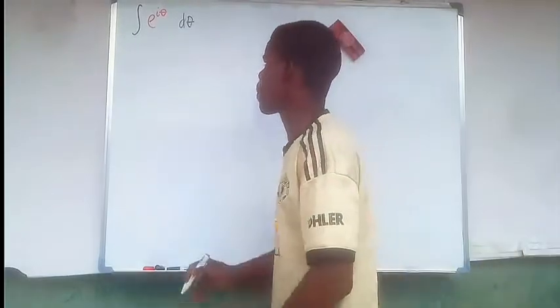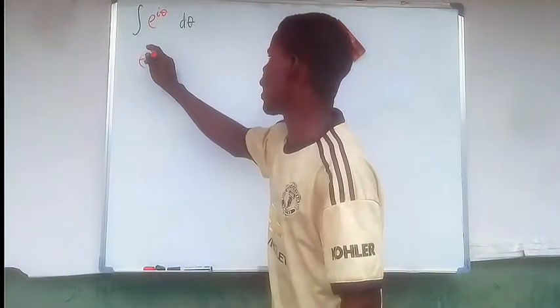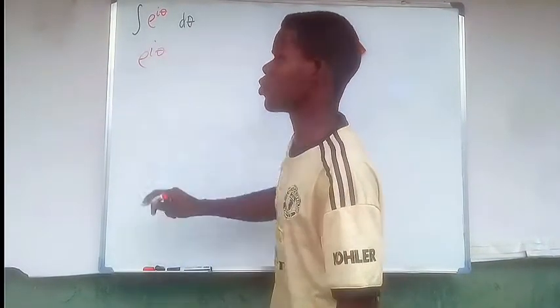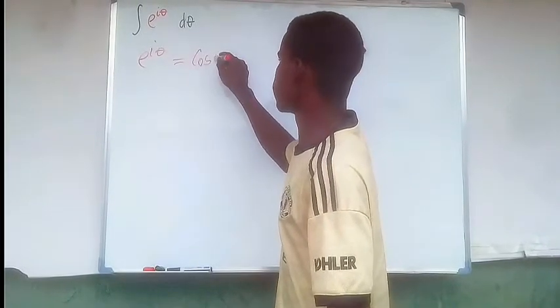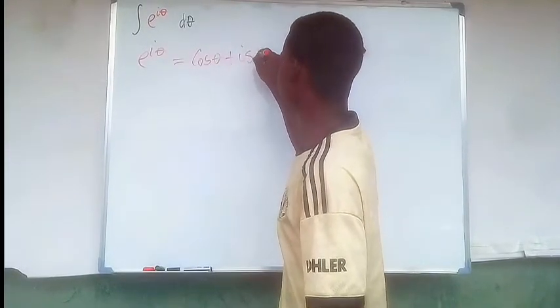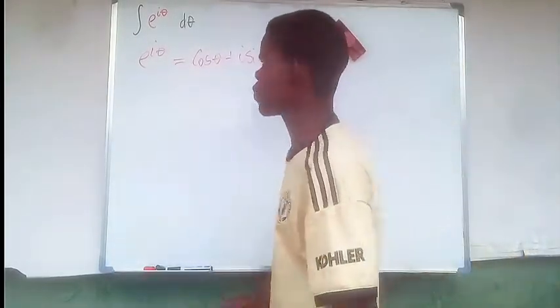Now I want you to notice that e to the i theta is equal to what? Euler's formula: cosine theta plus i sine theta. So we're going to make use of this. So we substitute that into the integral.